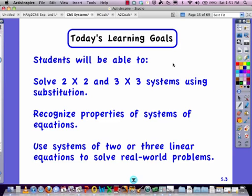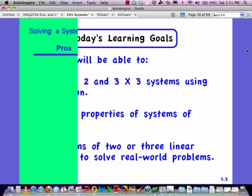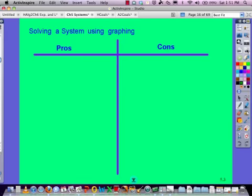So take a look here at our goals. We want to be able to take 2 by 2 and 3 by 3 systems, which means two equations, two unknowns, three equations, three unknowns, and solve that system using something we call substitution. We want to recognize the properties we're using and be able to do two or three linear equations to solve real world problems as well.